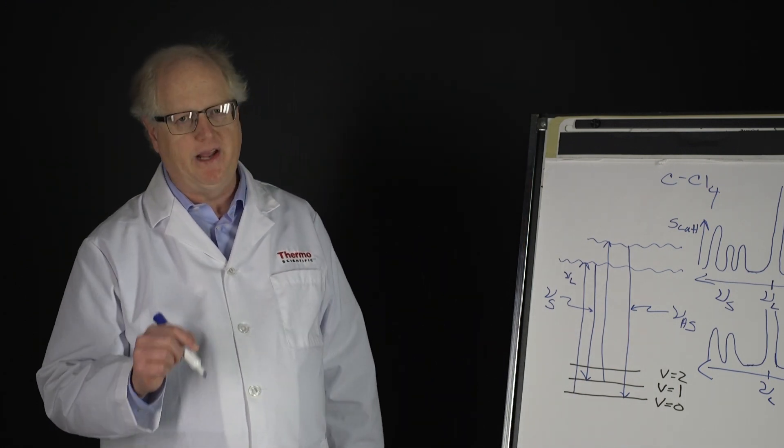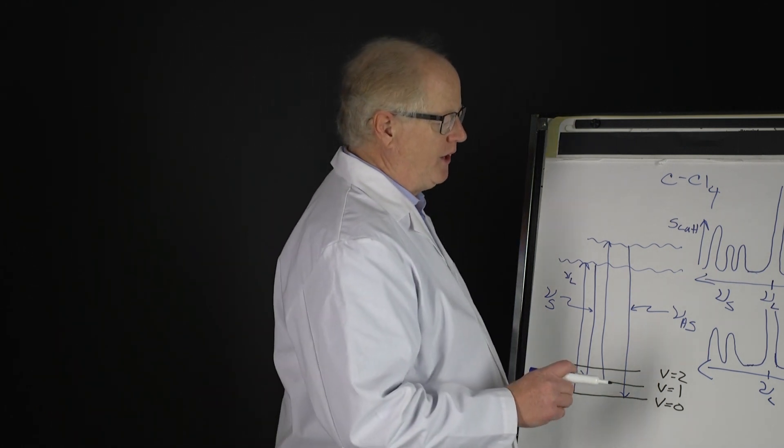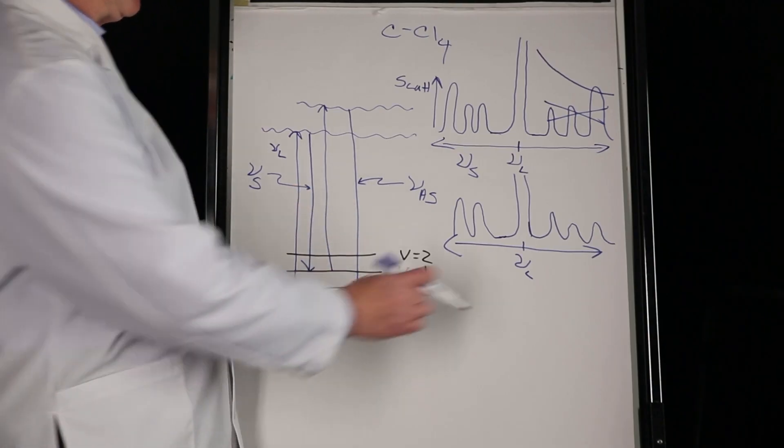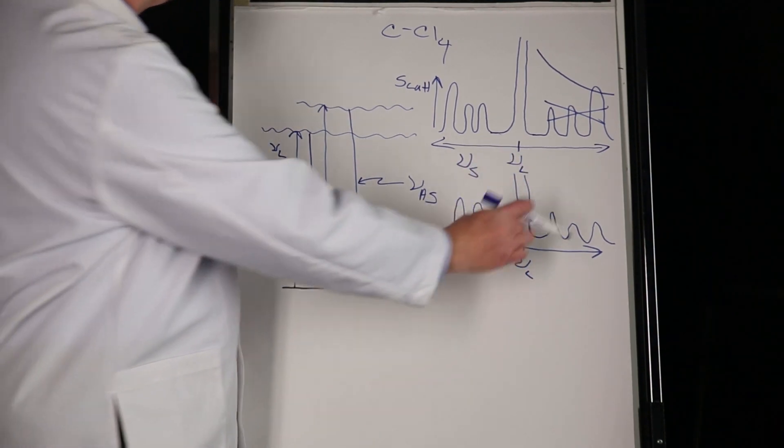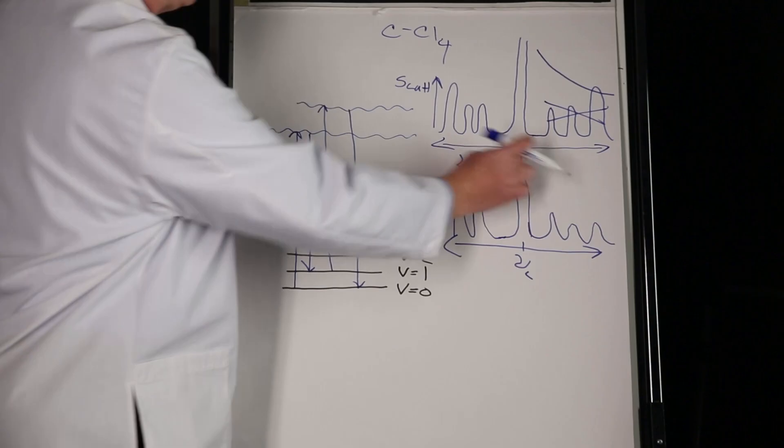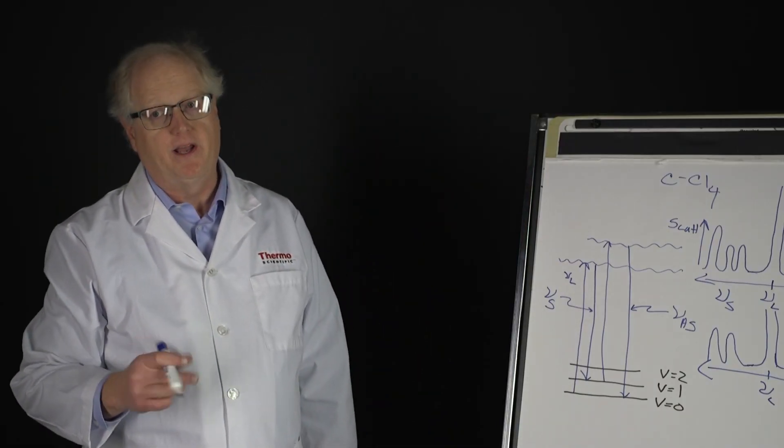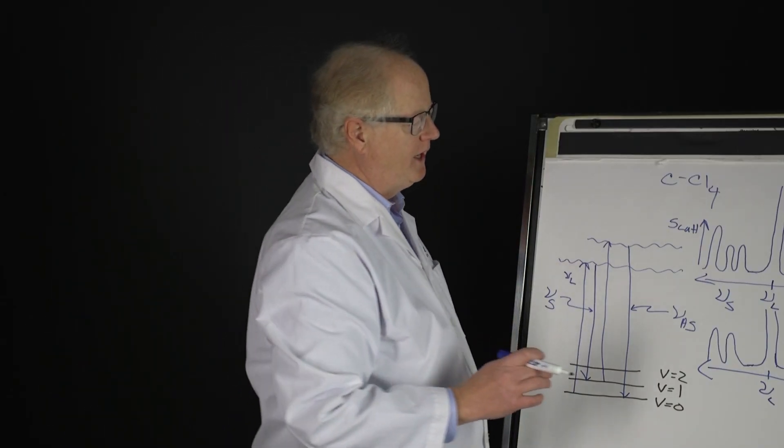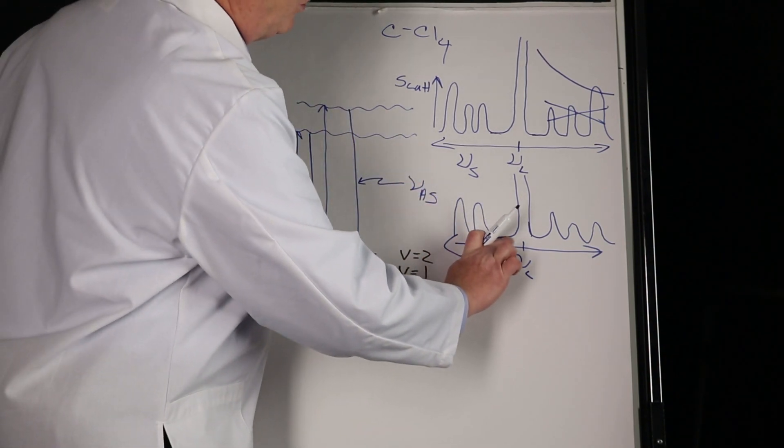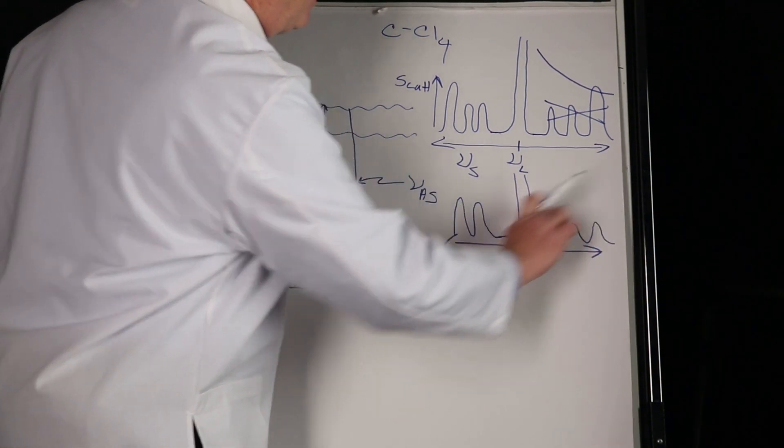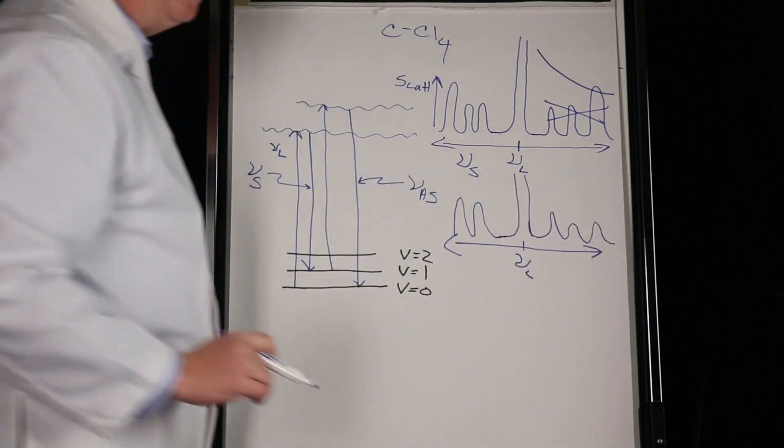So this is why Stokes spectroscopy is almost the only one ever done. As we'll see later when we talk about the instrumentation, there are filters which allow us to eliminate the laser, and there are mainly two kinds. One of them eliminates just the laser - that's called a notch filter, and it's quite expensive. On the other hand, there's something called a bandpass filter, which would eliminate it but also eliminates the anti-Stokes side.